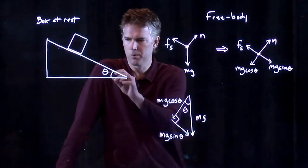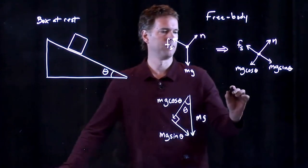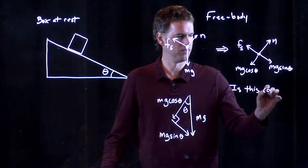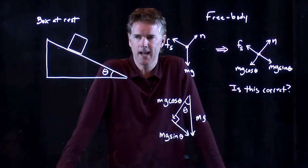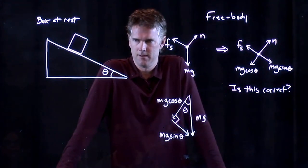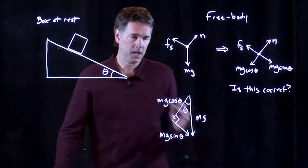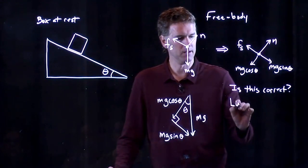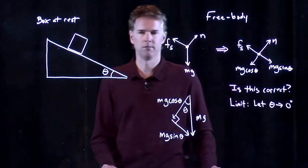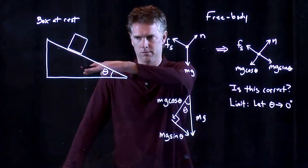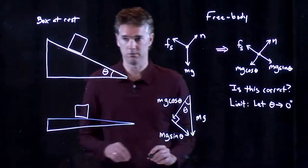So, this force down the incline is Mg sine theta. And this force into the incline is Mg cosine theta. But remember, we just took a guess, right? We weren't really sure if that theta corresponded to that theta. And so, now we need to decide, are we right? Is this correct? Anybody remember how we do that? How we decide if that guess is correct or not? It has to do with looking at the limits, right? And the limit that I like to look at is the following. Let theta go to zero.